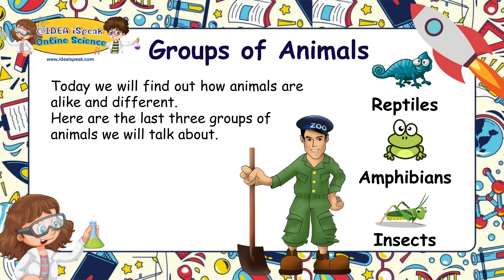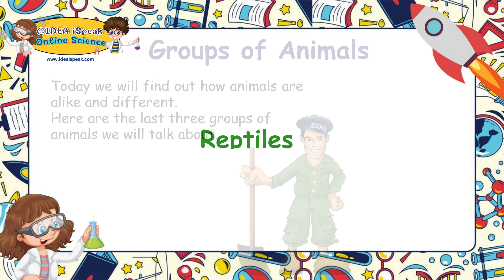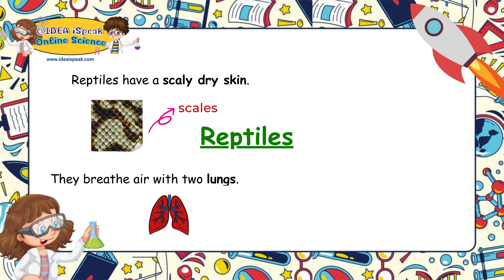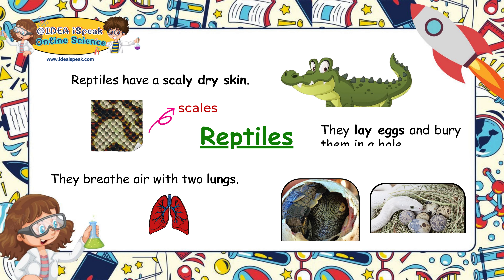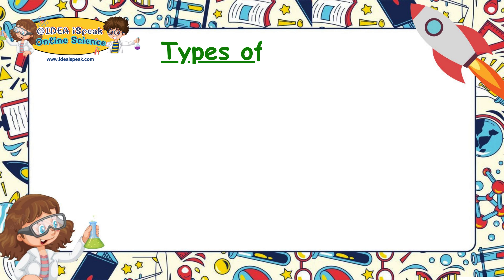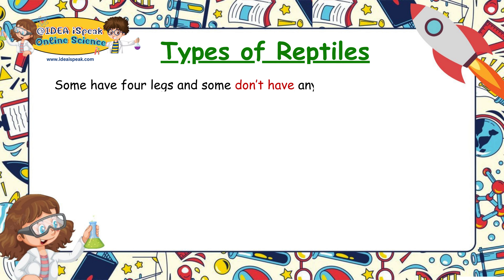Reptiles, amphibians, and insects. Reptiles have a scaly, dry skin. They breathe air with two lungs. They lay eggs and bury them in a hole. There are many different kinds of reptiles — some have four legs, some have no legs at all.